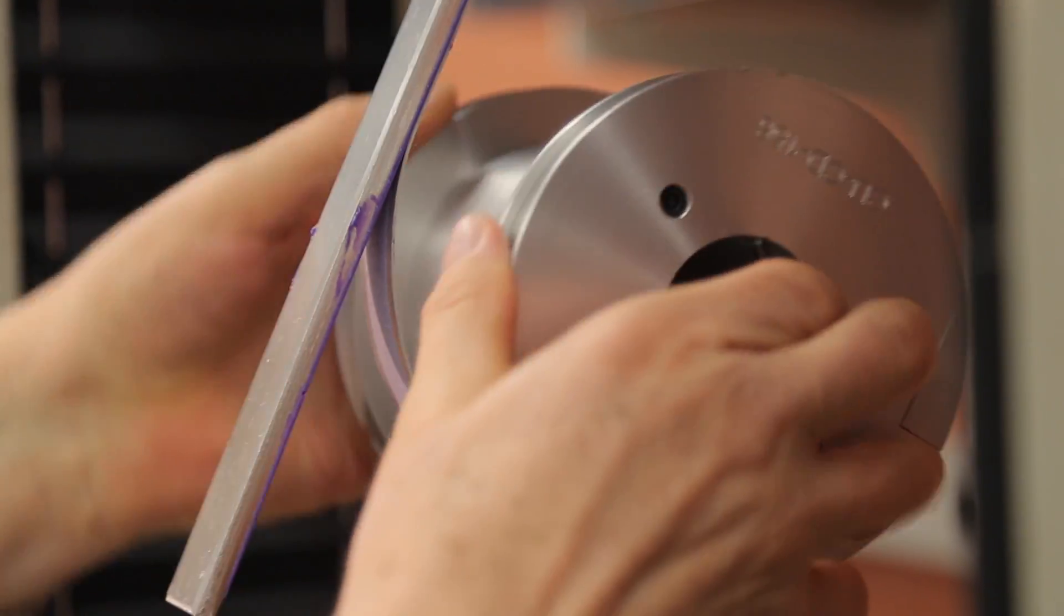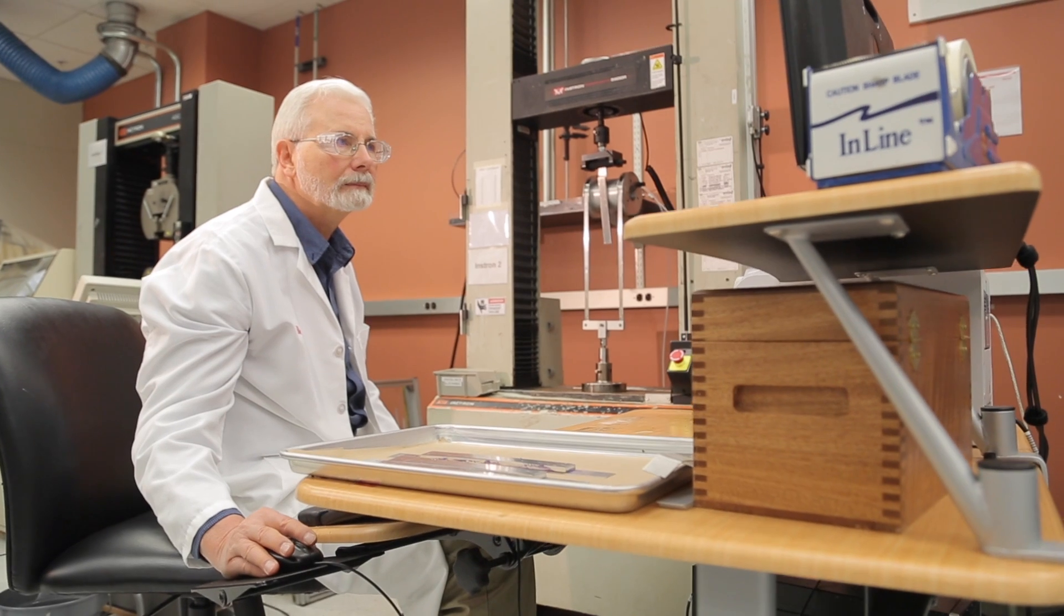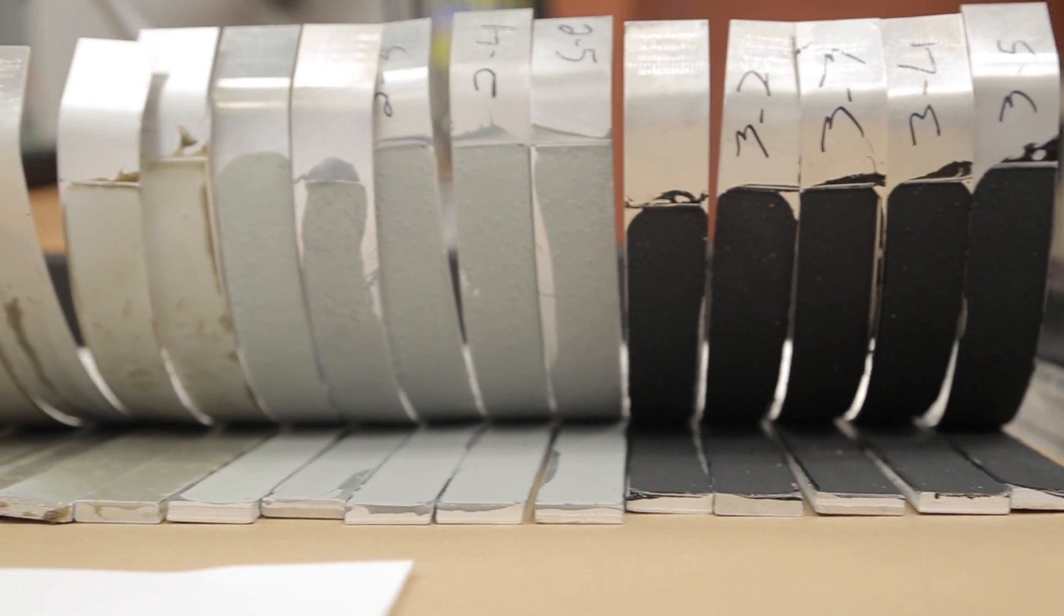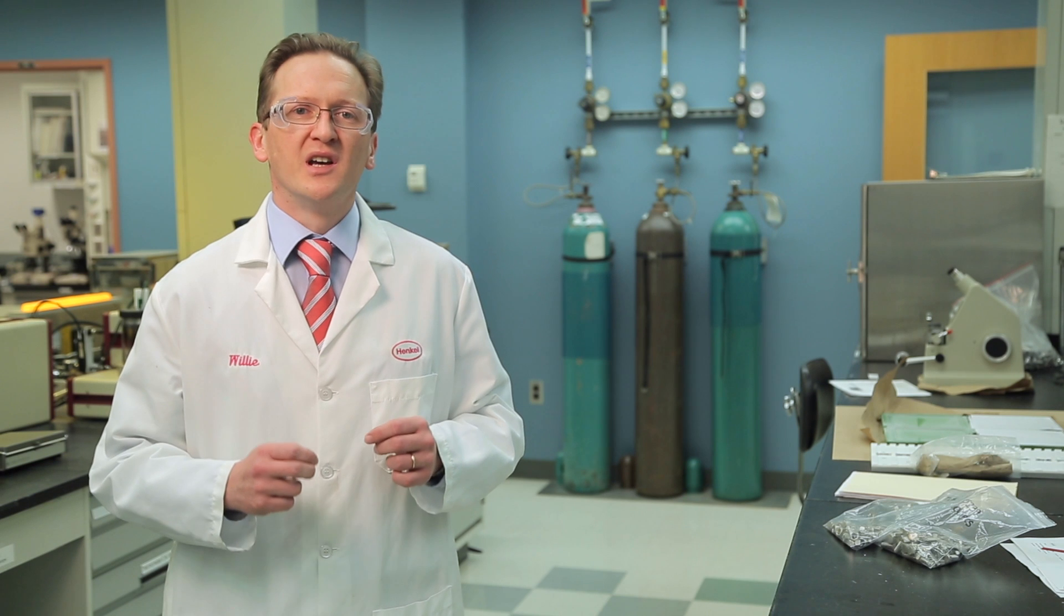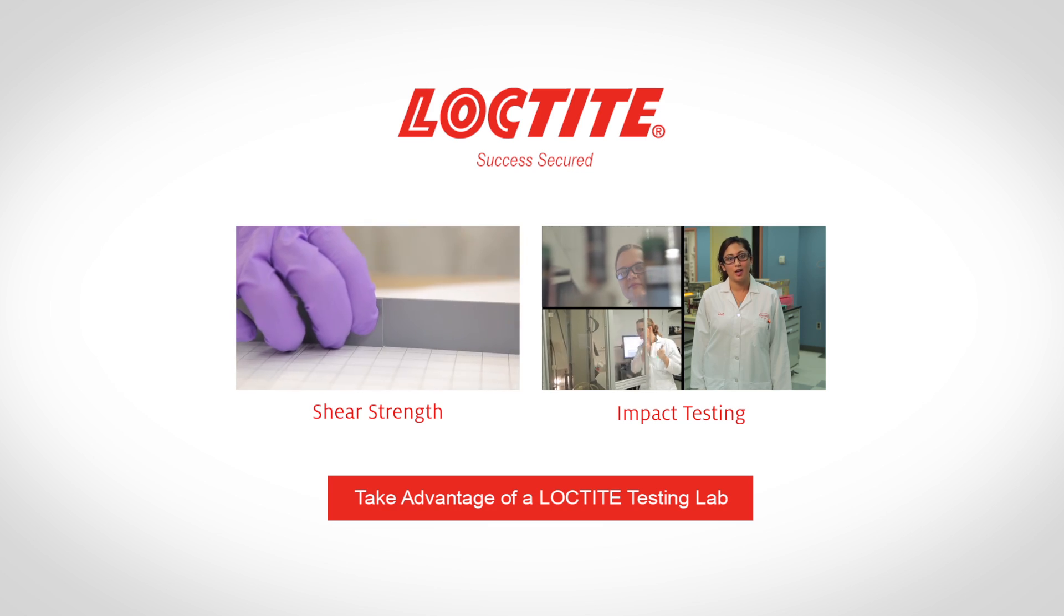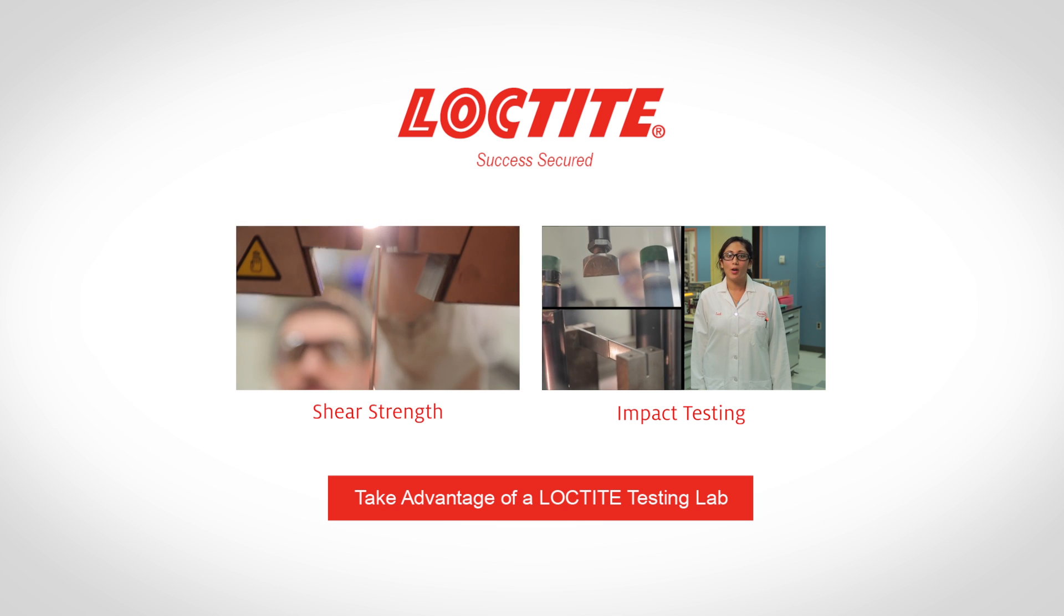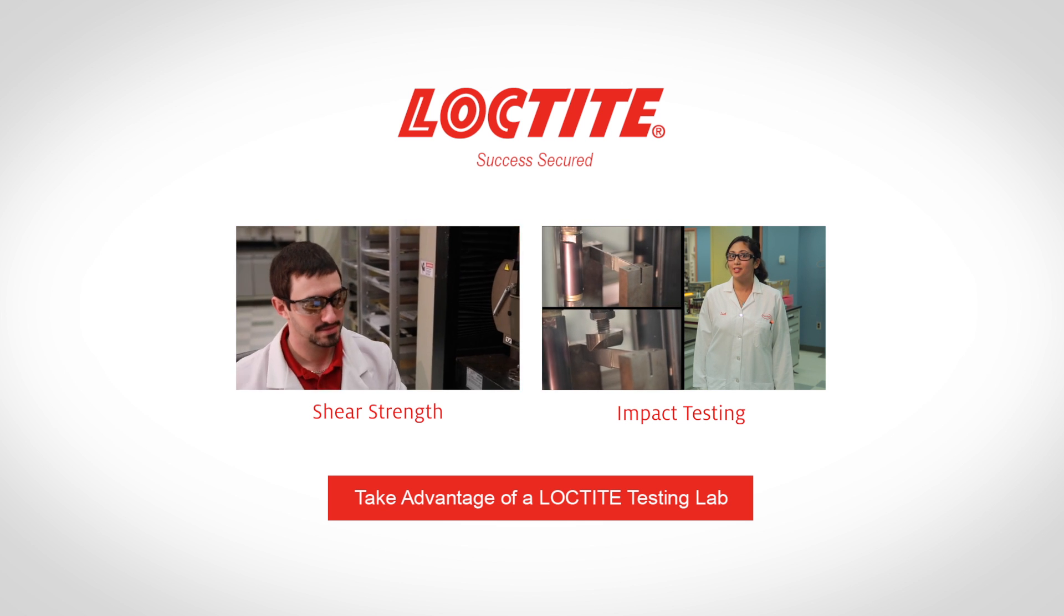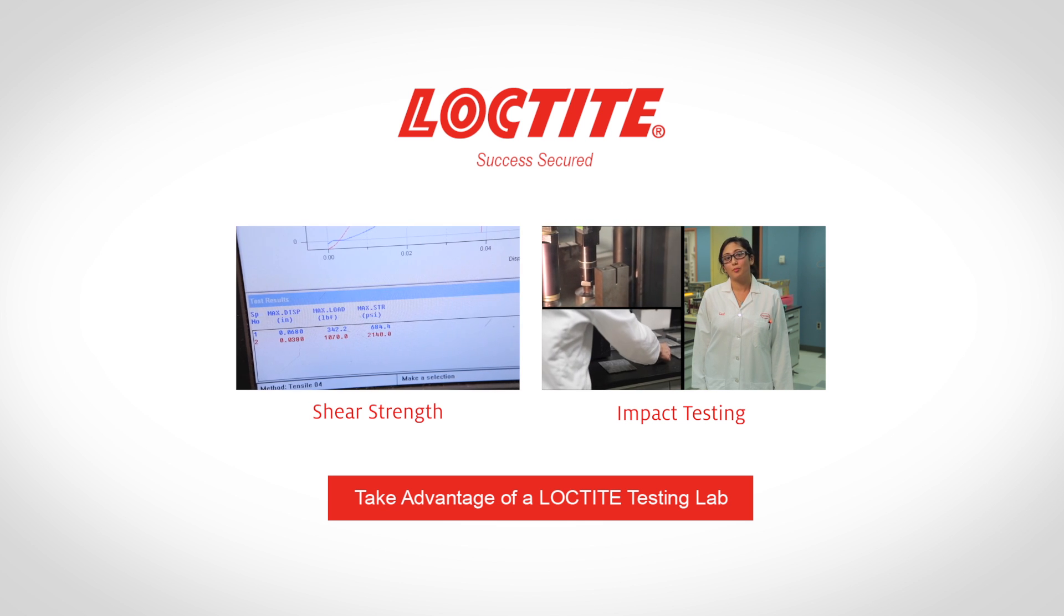This peels the flexible substrate away from its rigid mate. The test can be run using only the flexible substrate and this value is subtracted from the combined result to provide the peel strength of the adhesive alone.